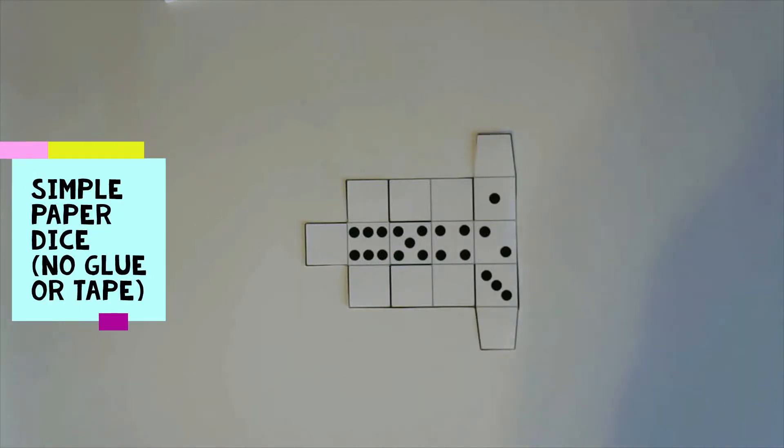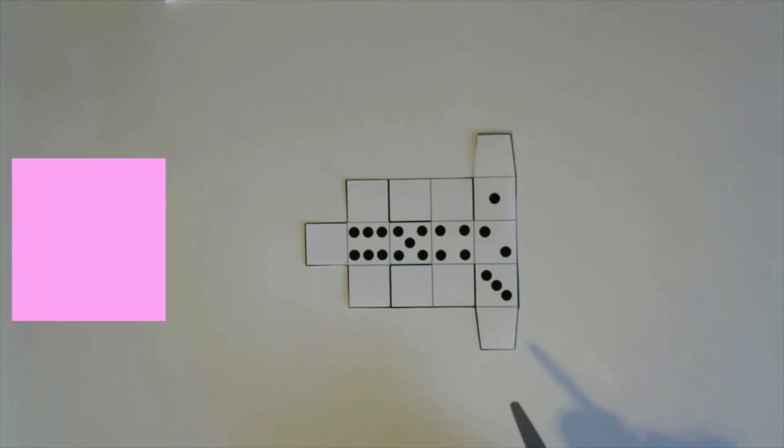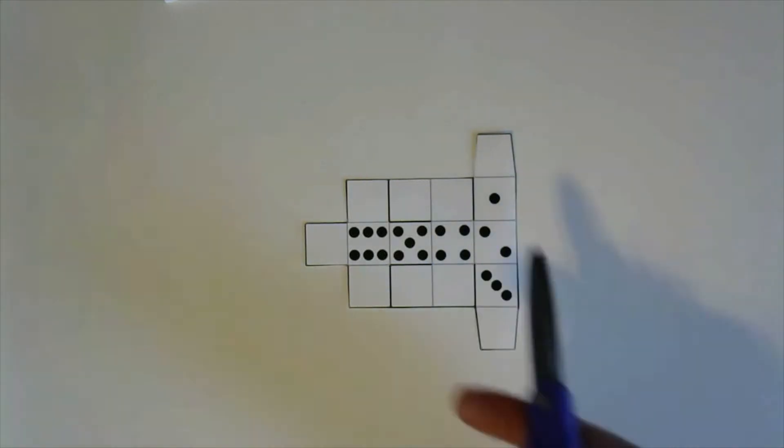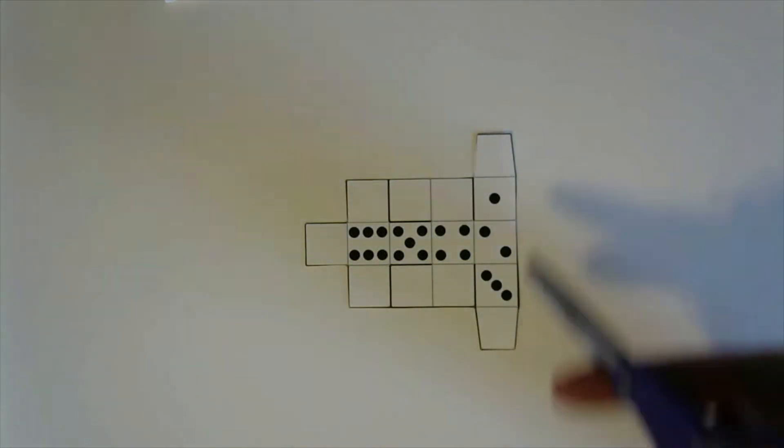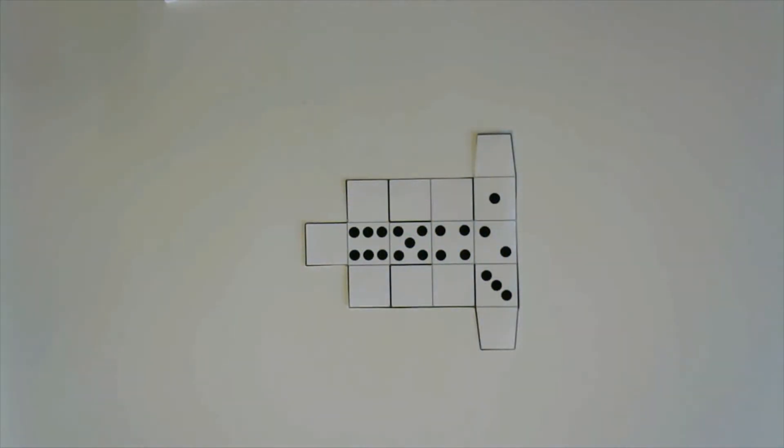Here's my template for a cube that I'm going to use to make dice. The nice thing about it is you don't need glue or tape to put it together, and it's not as hard to fold as some origami models. You just have to cut out the template, and if you want dice, you'll want a nice print like this.